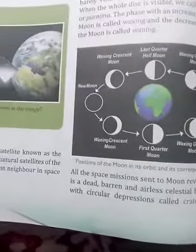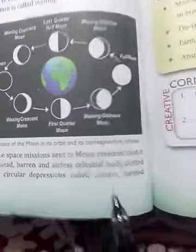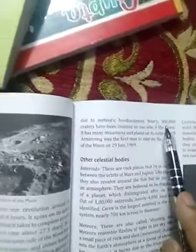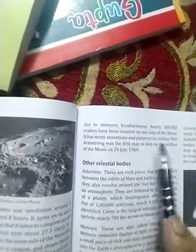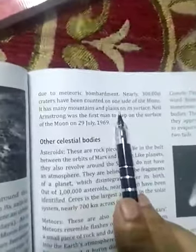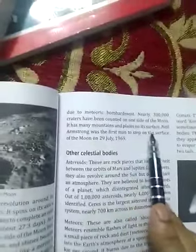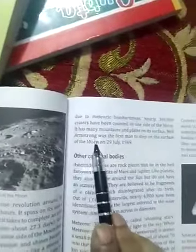The moon's surface is dotted with circular craters due to meteoric bombardment. It also has many mountains and plains.